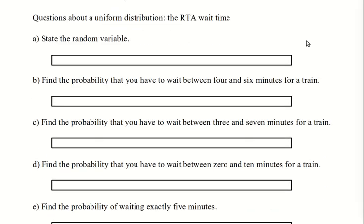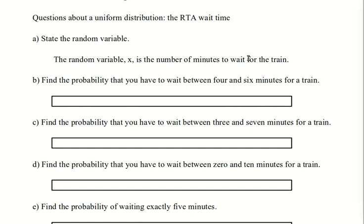So, the first question is, this is still about the blue and green lines. It says to state the random variable. So, here, the random variable is how long we're waiting. The random variable, x, is the number of minutes we wait for the train.